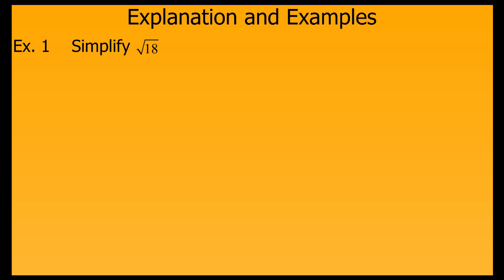So in this example, let's simplify the square root of 18. First, we choose to break down 18 into the product of 9 and 2. We chose 9 and 2 because 9 is a perfect square. So now we can take the square root of 9 and get 3, which just leaves us with a radicand of 2. So 3 times the square root of 2 — sometimes just written as 3 root 2 — is considered simplified form.